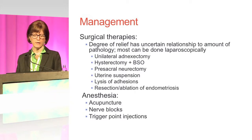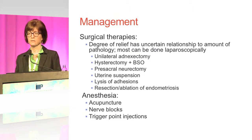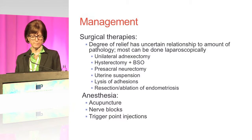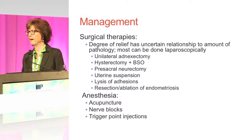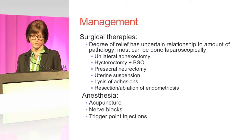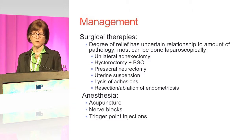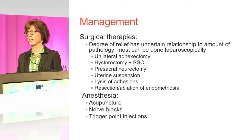Very rarely, if ever, is surgical therapy indicated. There are some that would recommend surgical therapy for chronic pelvic pain, although it's very drastic for an adolescent patient. These include adnexectomy, neurectomies, suspension, lysis, and resection. Our anesthesia colleagues can help a lot with acupuncture, especially if they are dual-boarded in anesthesia and acupuncture — some can do trigger point injections and nerve blocks. We work very closely with them for patients with chronic pelvic pain that we are unable to help with hormonal management, NSAIDs, or neuropathic intervention.